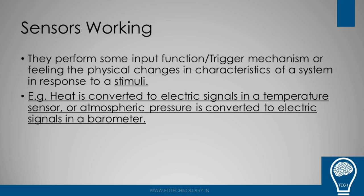For instance, atmospheric pressure is converted to an electrical signal in a barometer. Take your air conditioner: it senses the room temperature at 30°C and stimulates itself to turn on until the room temperature drops to 28°C — the minimum you have set. This is how sensors work — they read ambient values and trigger a programmed mechanism when a change is detected.